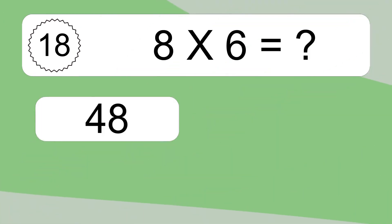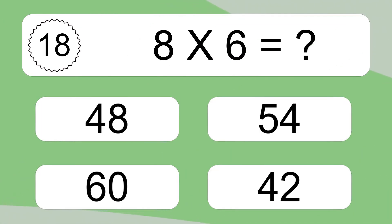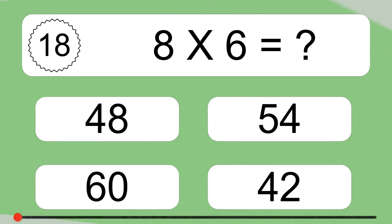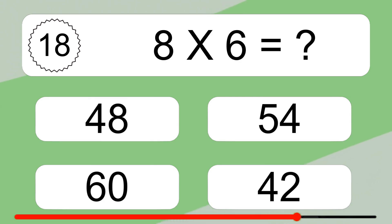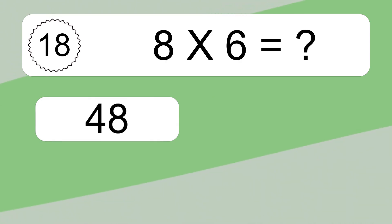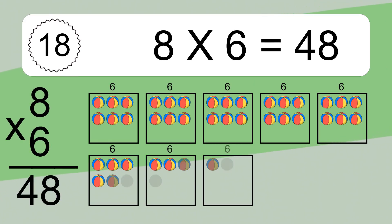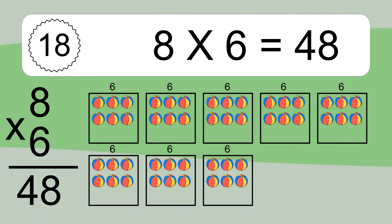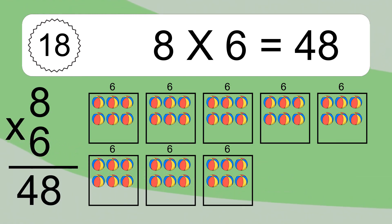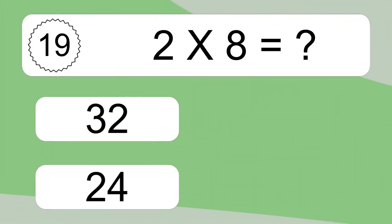8 times 6 equals what? 8 times 6 equals 48. We have 8 boxes, and each box has 6 colorful balls inside. If you count all the balls in all the boxes together, you will have 8 times 6 balls. This equals 48 balls.